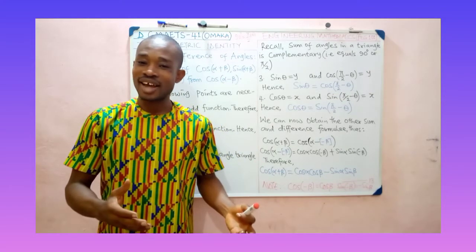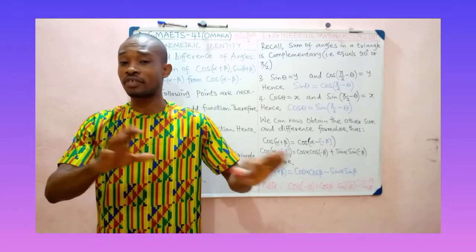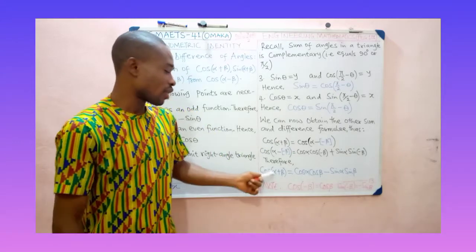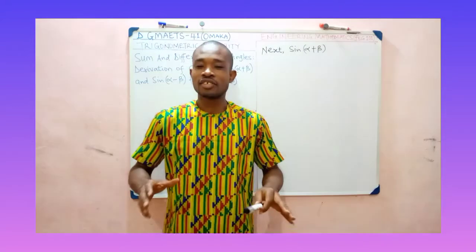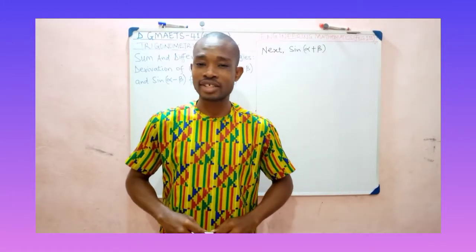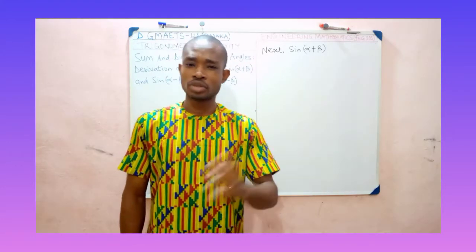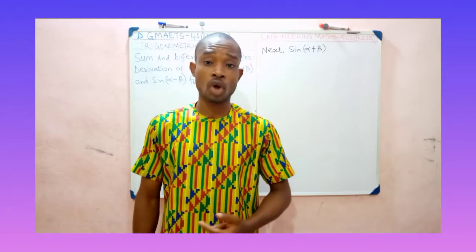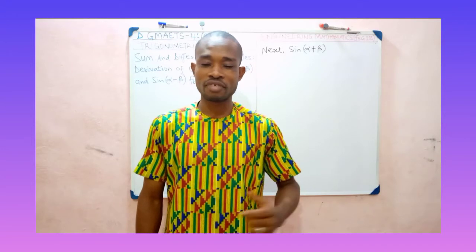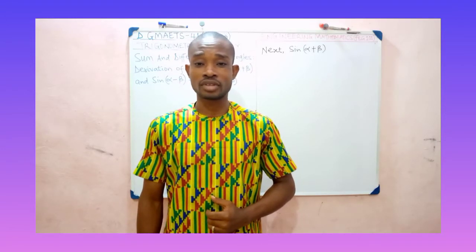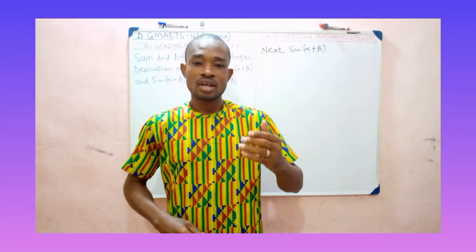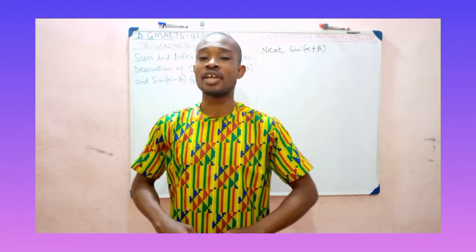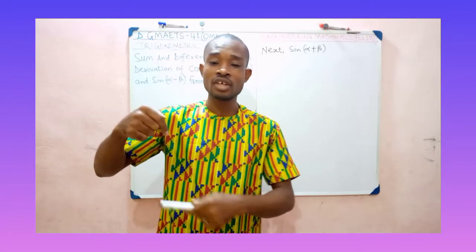In the next video, we will look at sin(α+β) and sin(α−β). Cos(α−β) has been derived and cos(α+β) has also been derived. In this video, we are now set to derive the trigonometric identity of sin(α+β). Recall that when establishing cos(α+β), I stated four basic concepts we must bear in mind: sin is an odd function, so sin(−θ) = −sin θ; and cos is an even function, so cos(−θ) = +cos θ.